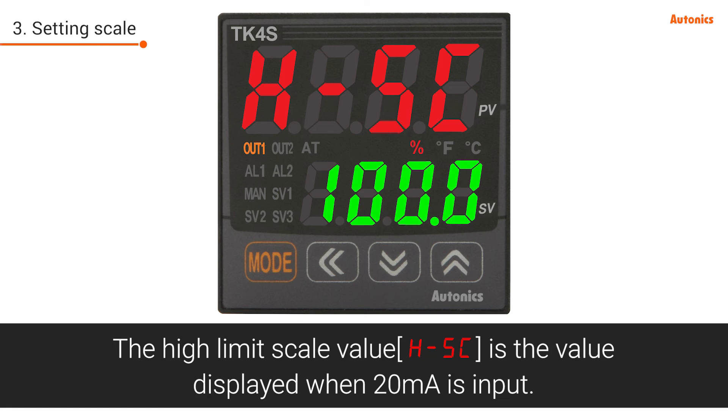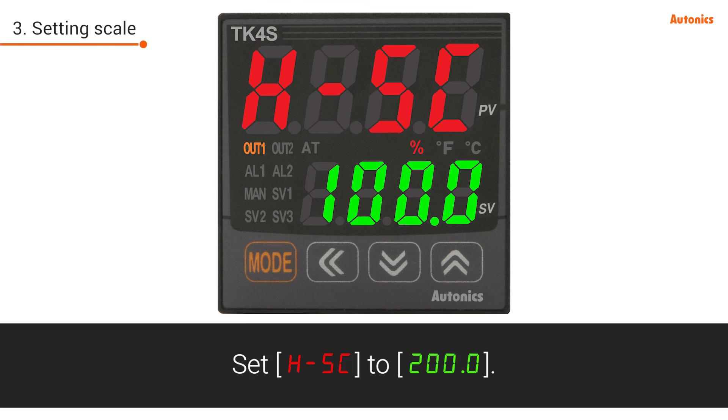The high limit scale value is the value displayed when 20 mA is input. Set H-SC to 200.0. Press the mode key.